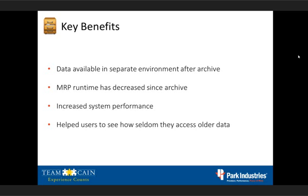Increased system performance — people were very happy with how searches returned so much faster. Our finance people are just ecstatic and looking forward to getting to four years plus current in production, because in the test environment when they do things in AP, AR, item ledger, and general ledger, things are so much faster for them. The system just does not have to filter through millions of records — it's several hundred thousand records instead of millions. Several users have stated that they thought they'd have to go into the archive more, but they're finding that 95% of their job is all on current data.